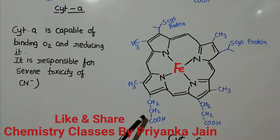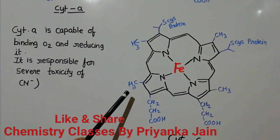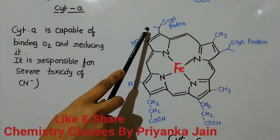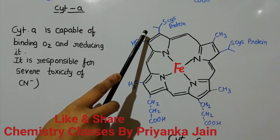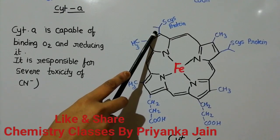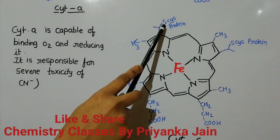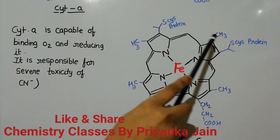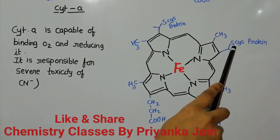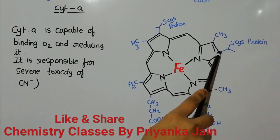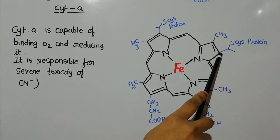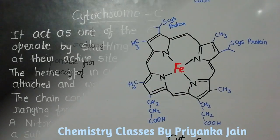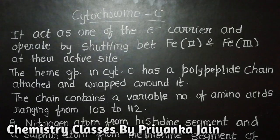Now look at the structure of cytochrome c. As I mentioned earlier, it is attached to the protein by covalent linkage. Here the sulfur atom of a cysteine residue of the protein is linked on one side, and another cysteine group's sulfur atom is linked on the other side — forming covalent bonds at both positions.